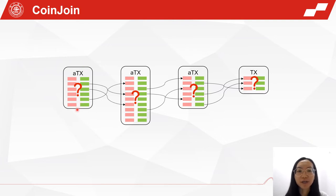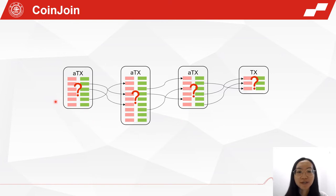In each aggregate transaction, for each output coin, others cannot know which input coin is its source. Therefore, the transaction graph cannot be recovered.